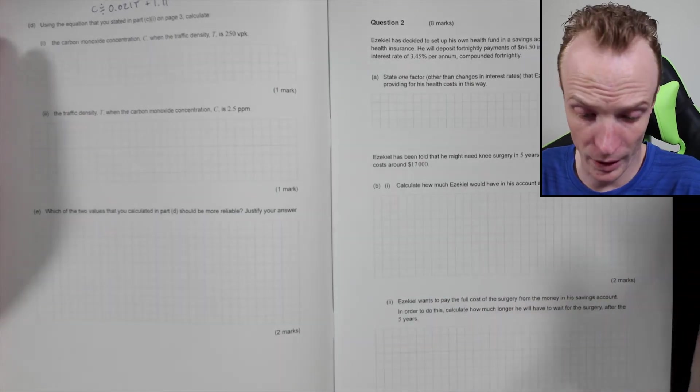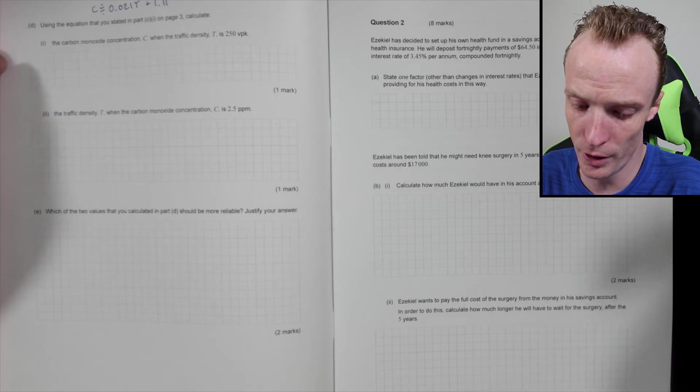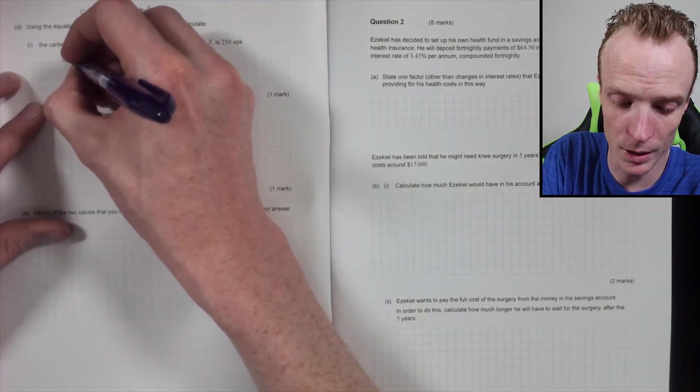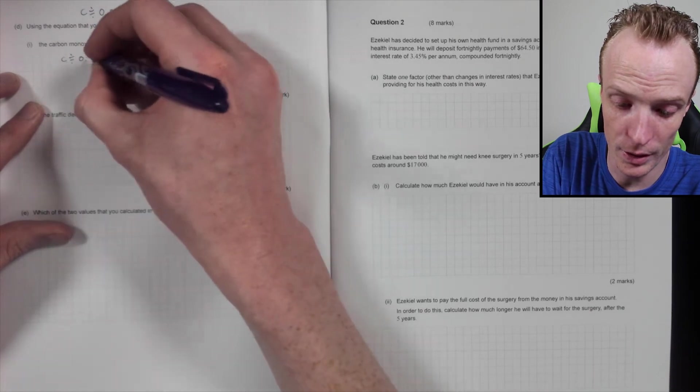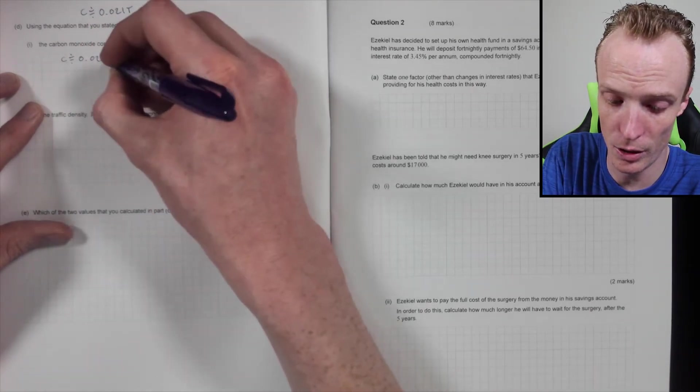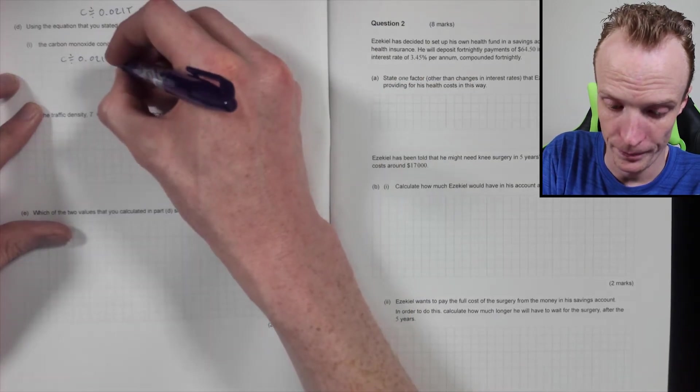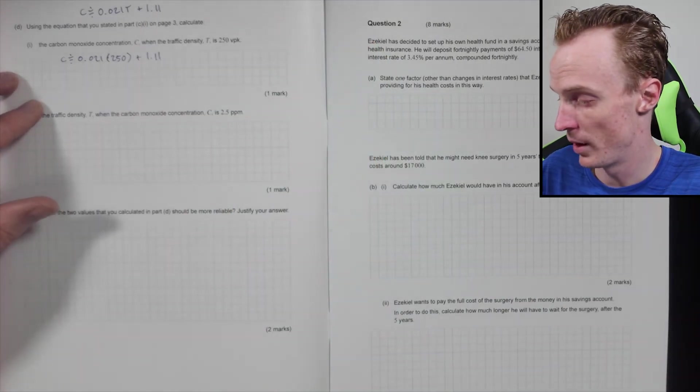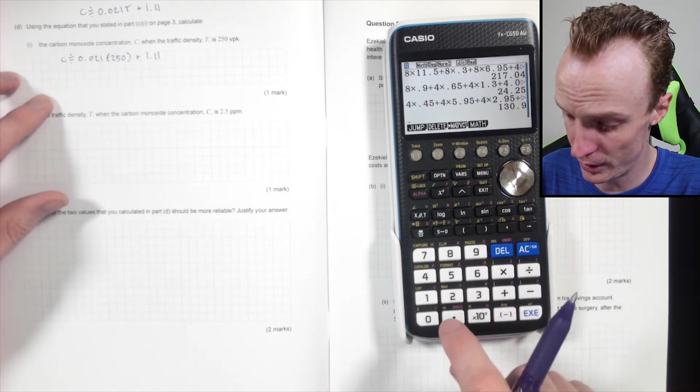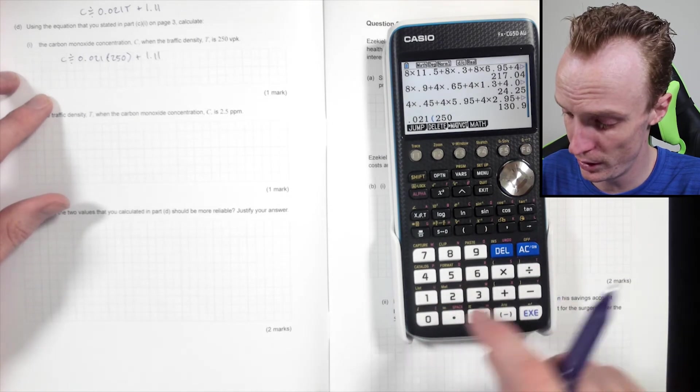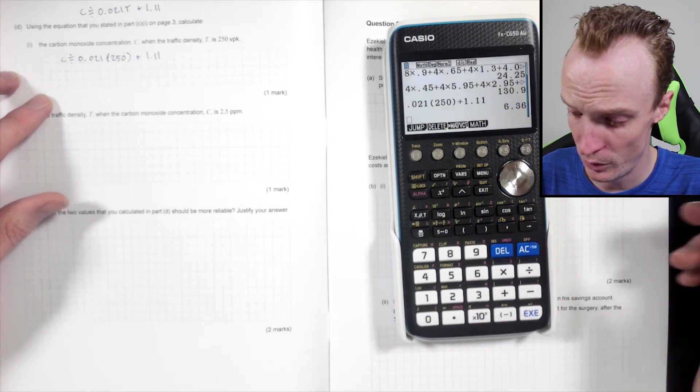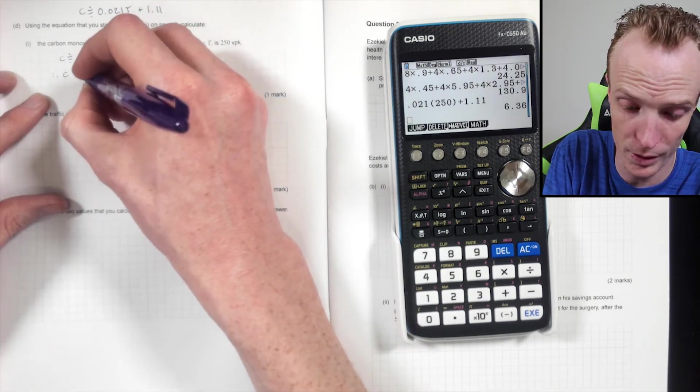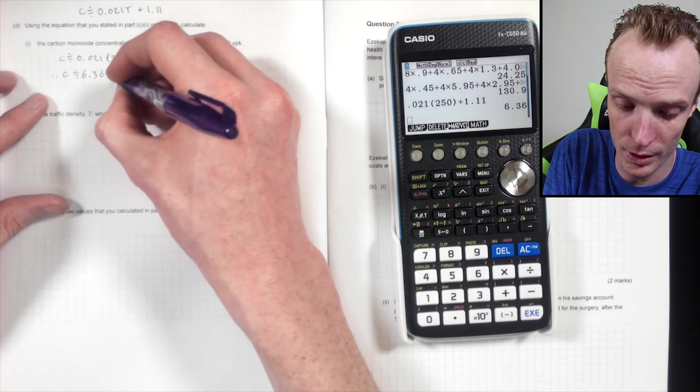So I want to calculate the carbon monoxide concentration c when the traffic density t is 250. So when t is 250, it's easy enough just to substitute it in. So c will be approximately equal to 0.021 times 250 plus 1.11. And then you just get a calculator out and whack that in. So 0.021 times 250 plus 1.11. Therefore c is approximately equal to 6.36, and then don't forget units, so it's parts per million here.